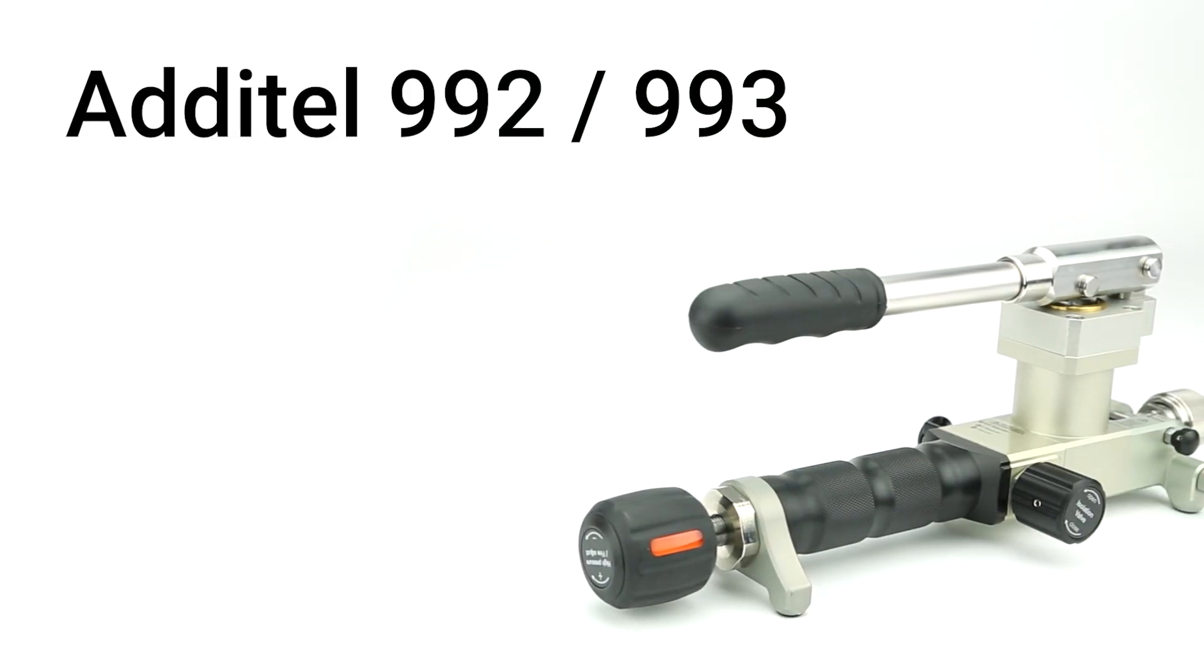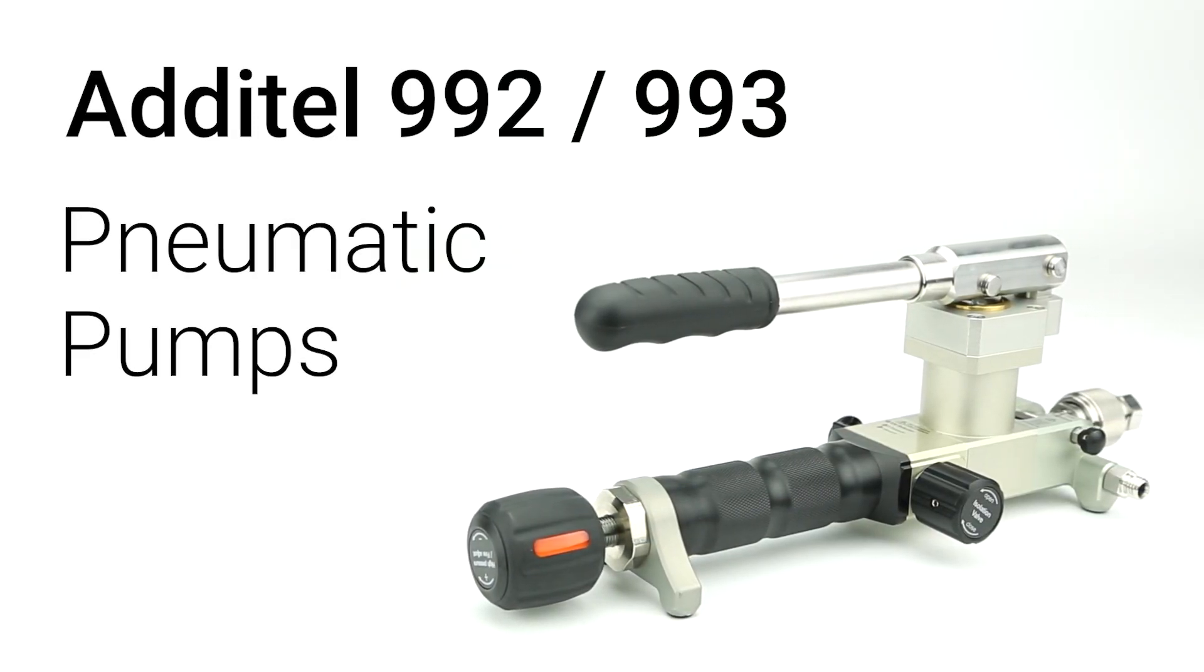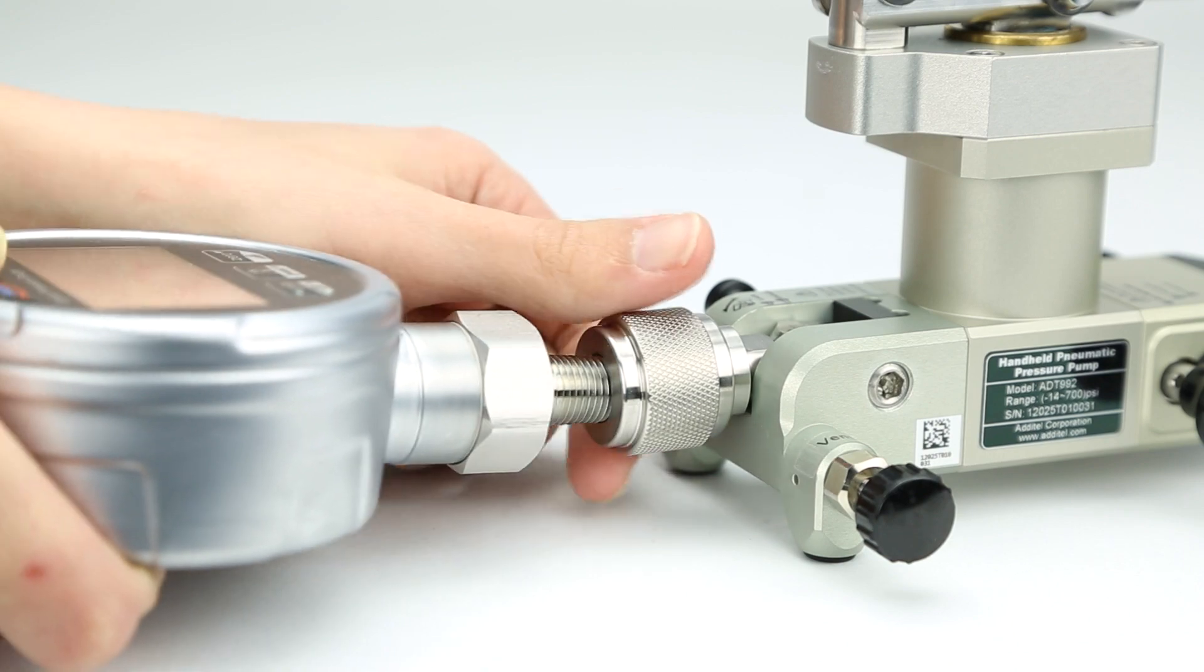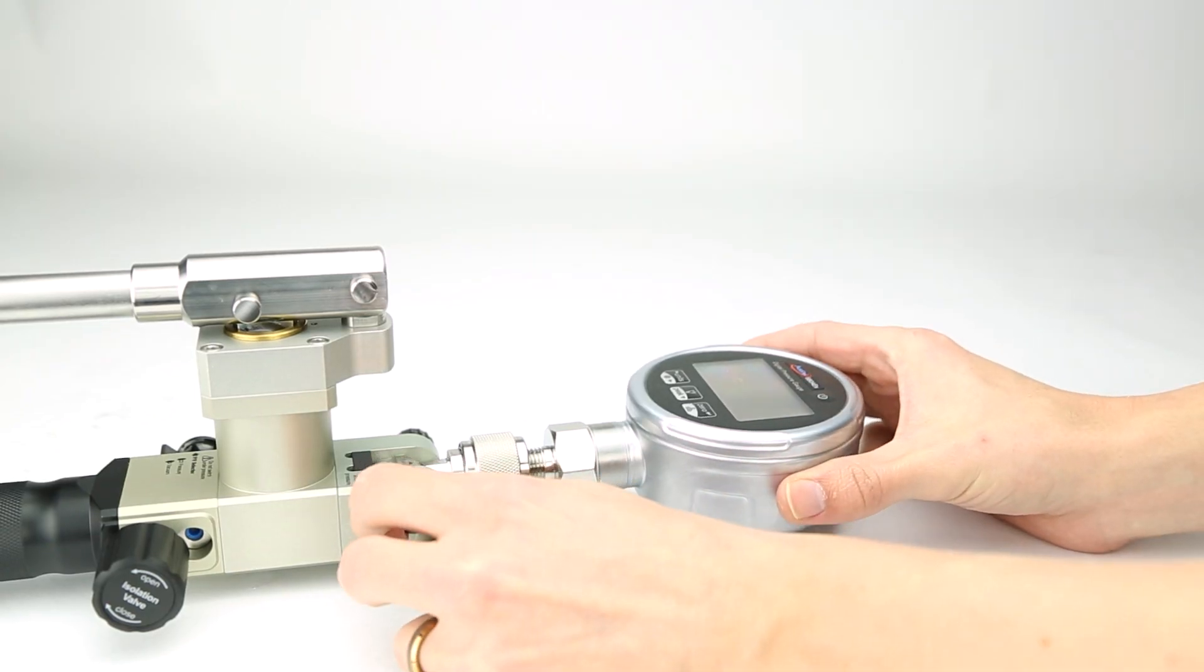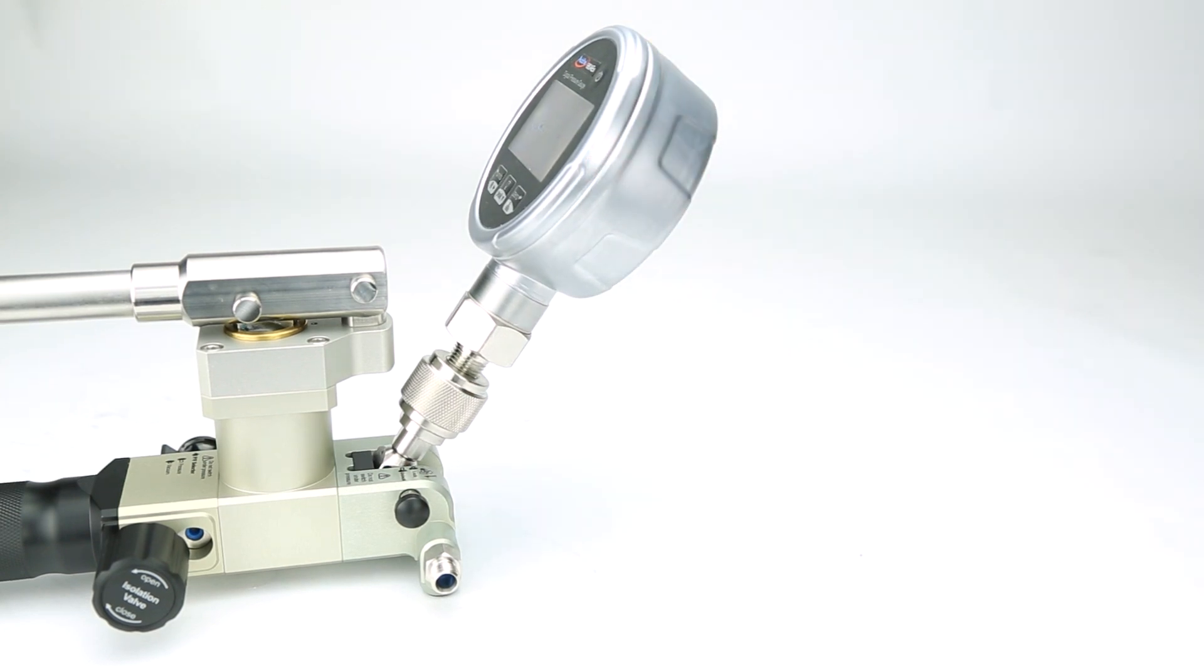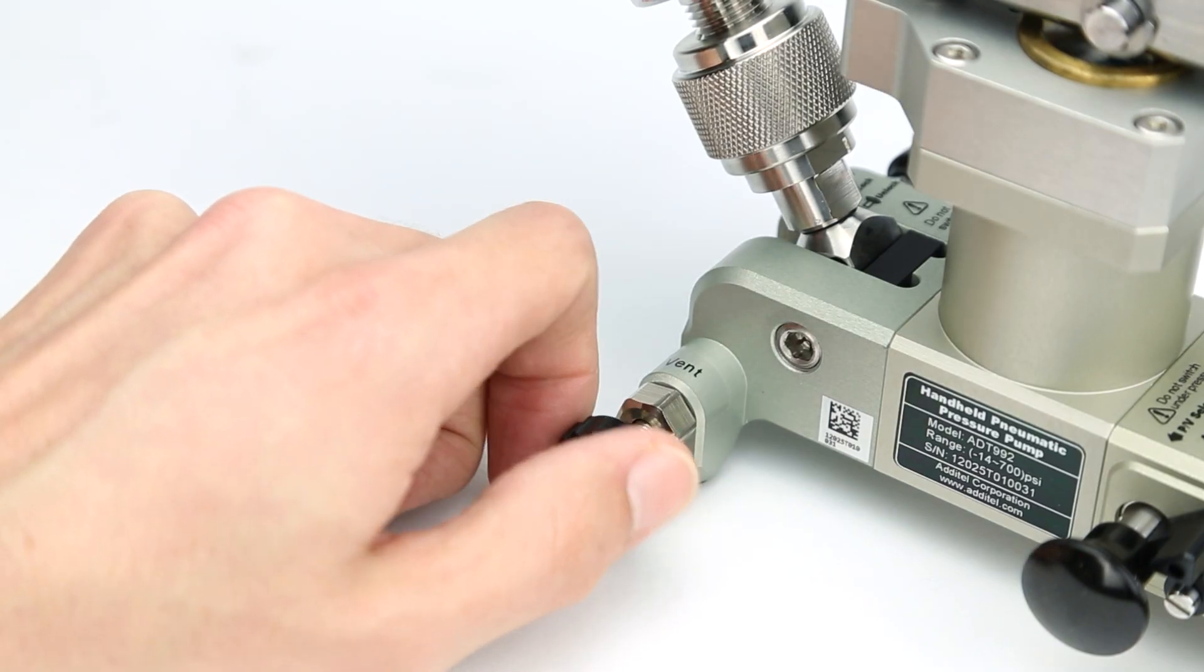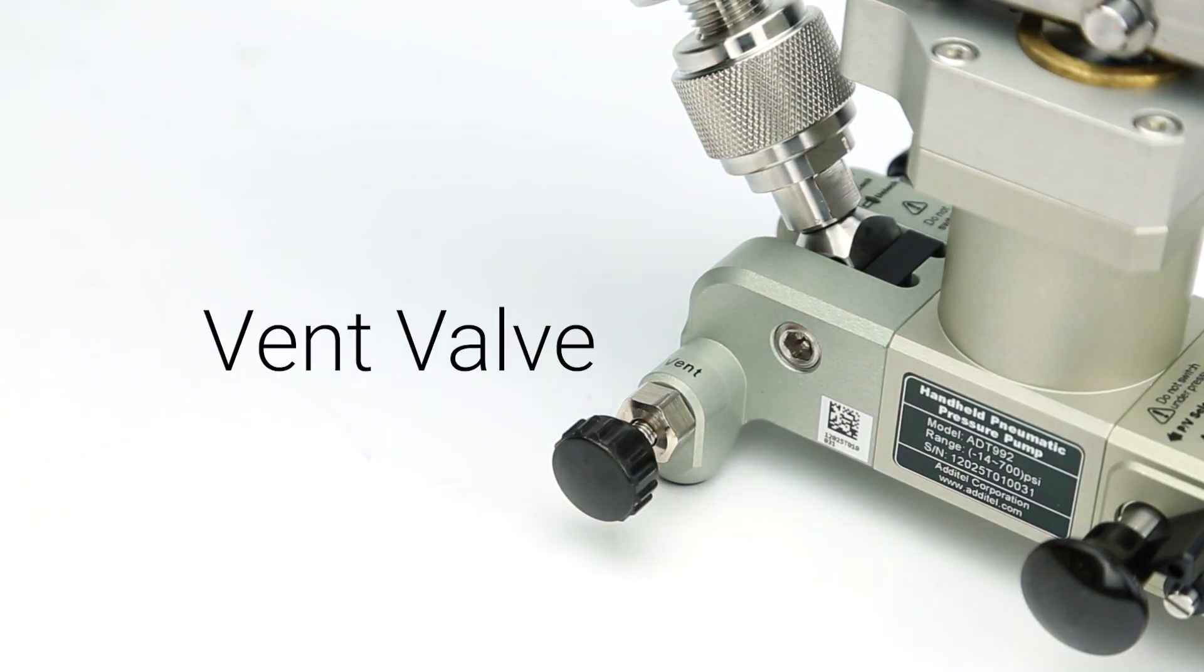Let's take a closer look at the operation of these pumps, starting with the pneumatic models. To begin, attach a reference gauge to the adjustable port and change the position according to the desired orientation. To maximize the longevity of the seals, it's advised to only change the reference port position while the pump is not under pressure.